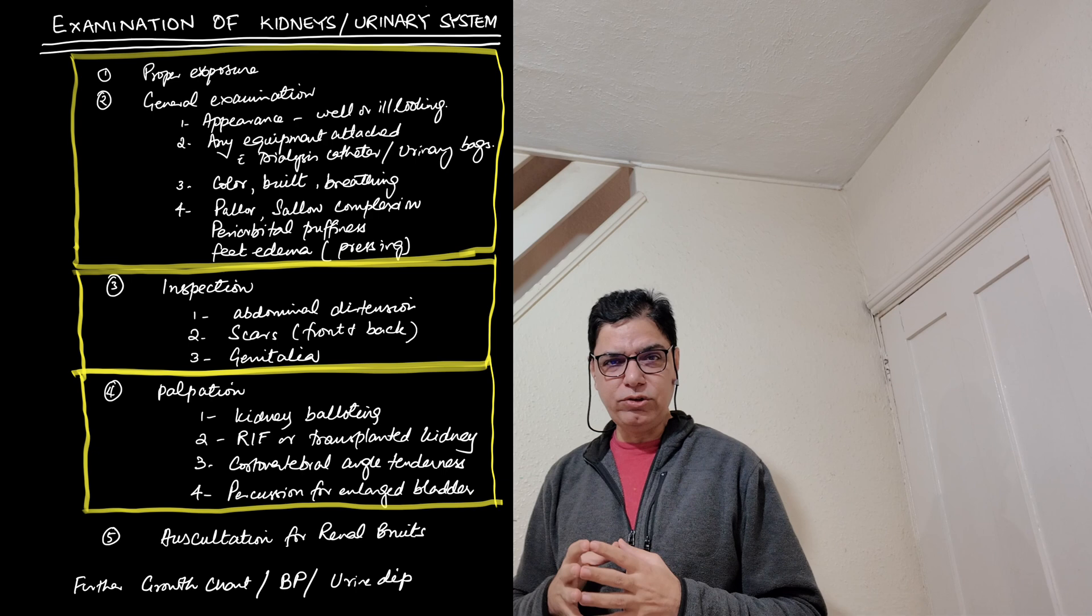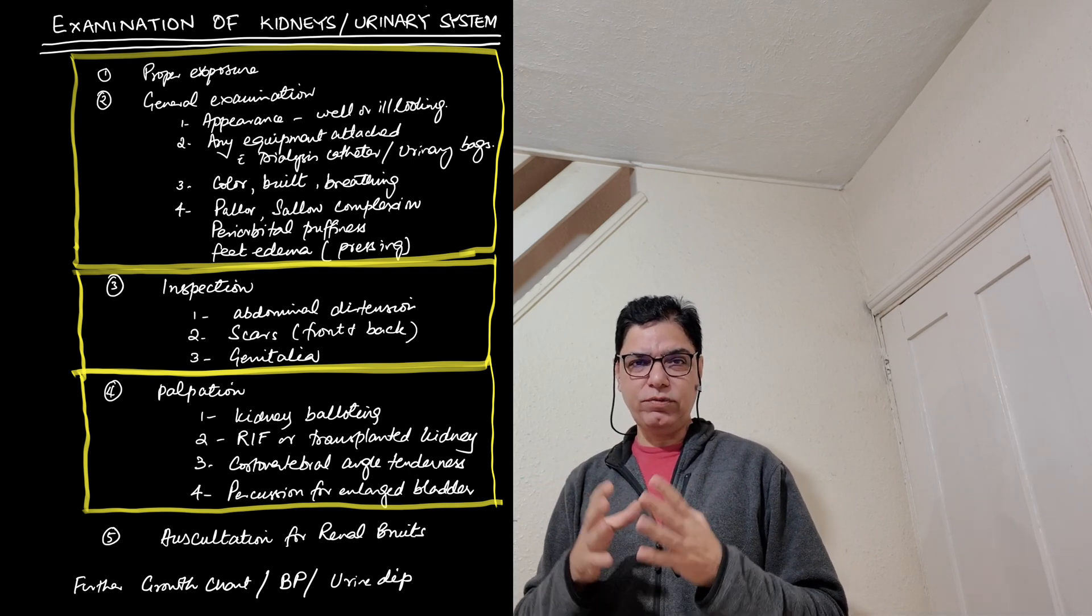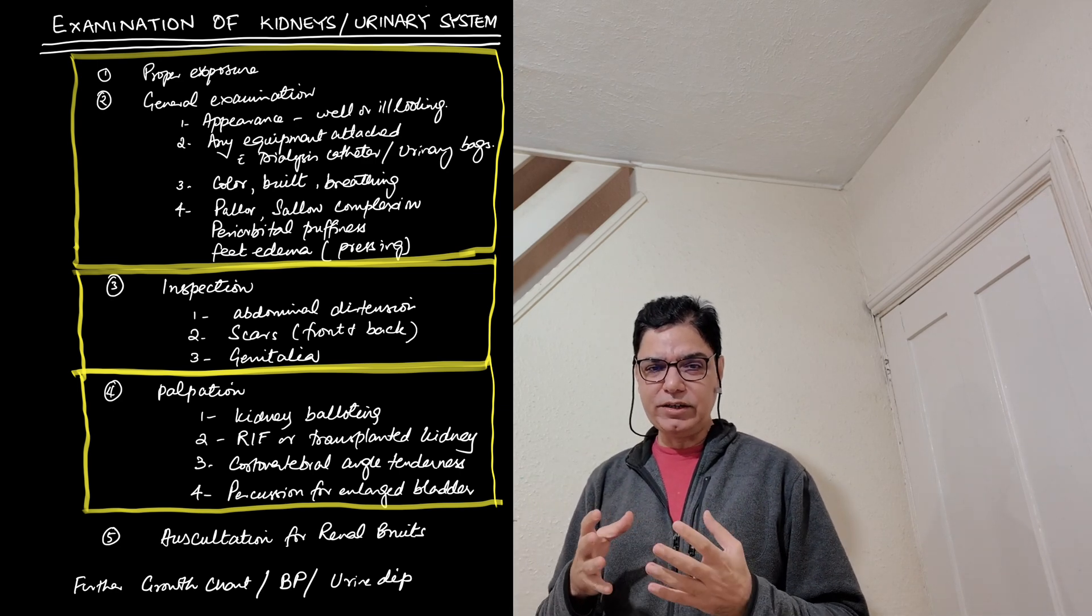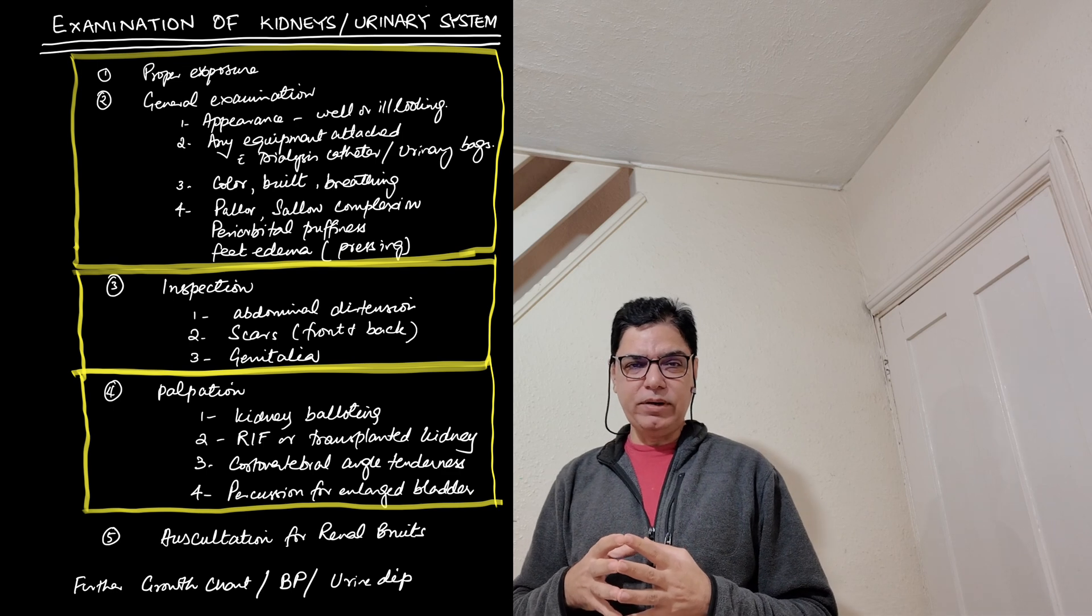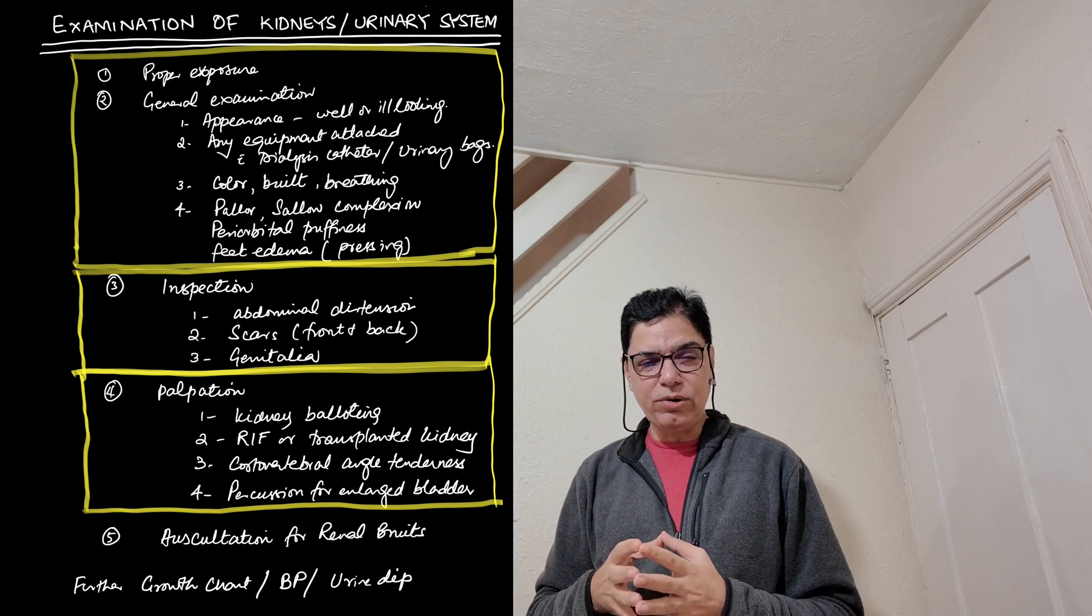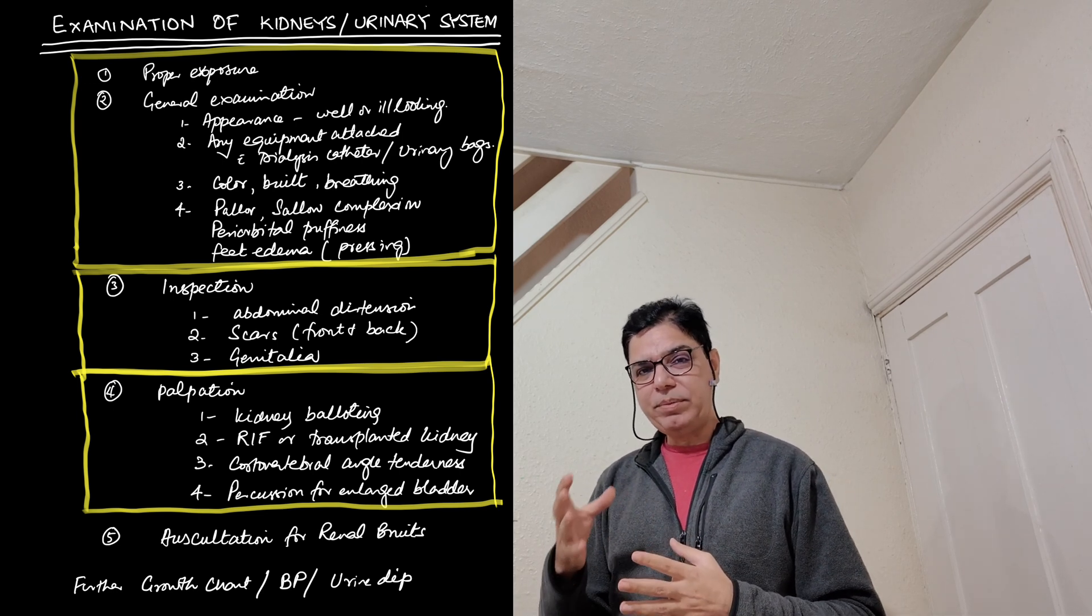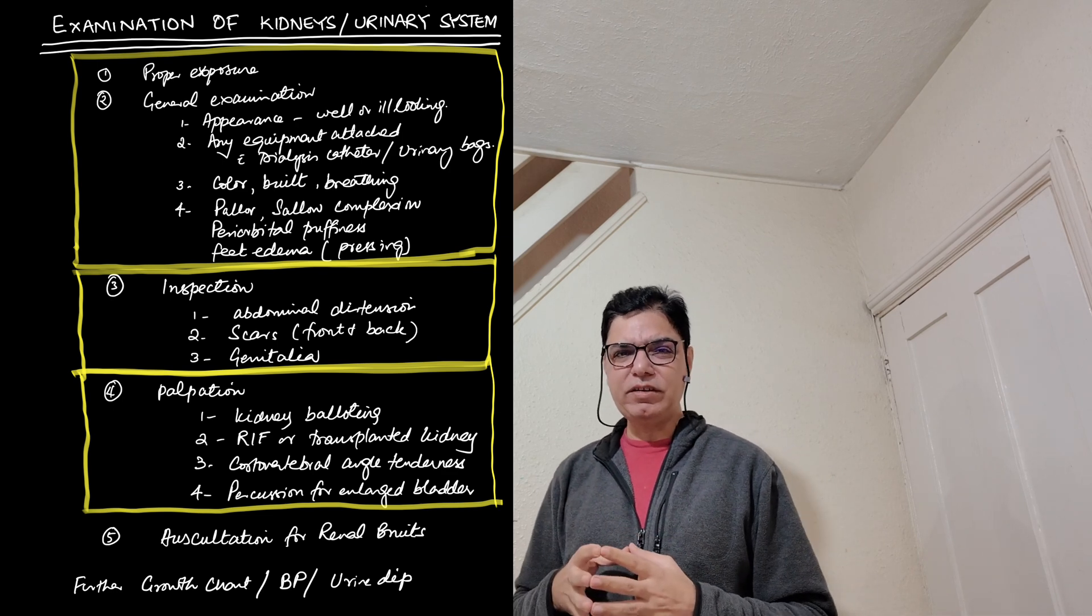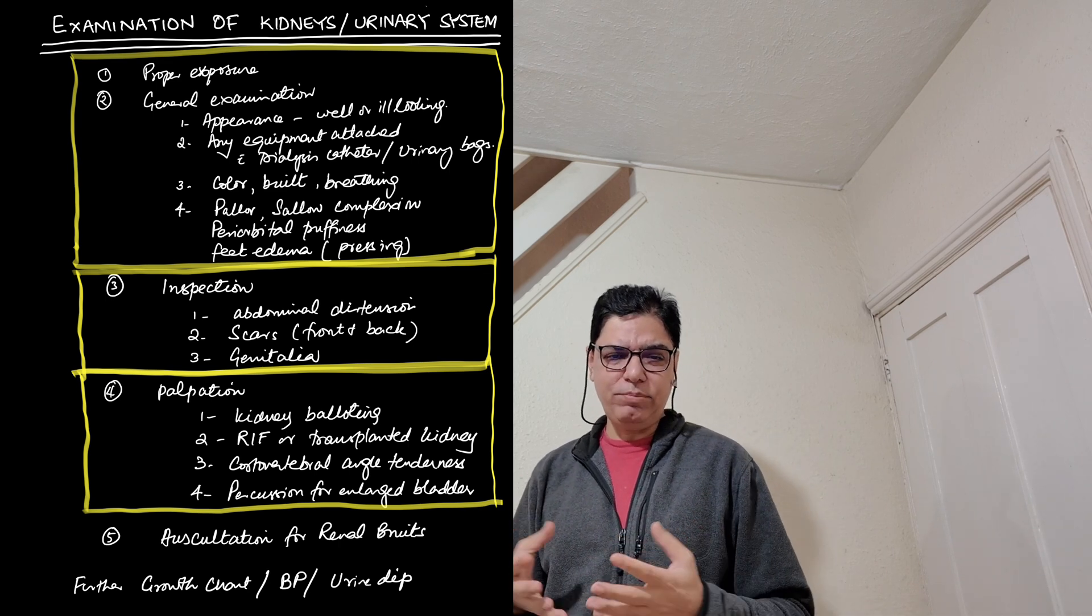The first thing is general examination. You are going to have a look at the child. What do you look in general examination? You are looking at the appearance of the child. First thing you look whether the child is well looking or is he ill looking, because that gives you the severity of the underlying condition. You also notice if the child has got any equipment attached to him, for example a urinary catheter or maybe a dialysis machine or dialysis catheter. You also look at the color of the child, does he look well pink, well perfused, or does he look a bit pale or dehydrated? You also look at the build of the child, whether the child seems to be properly built for his age or do you think he is underweight, malnourished. And you look also at the breathing of the child, whether he has got any breathing difficulties, because sometimes with different types of urinary problems like fluid overloads, they can have breathing issues as well.